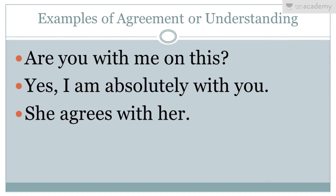Examples of agreement or understanding. First: 'Are you with me on this?' — meaning, are you agreeing with me, are you on my side? Second: 'Yes, I'm absolutely with you' — an answer showing agreement and understanding. Third: 'She agrees with her' — another example of agreement or understanding, all using the preposition 'with.'